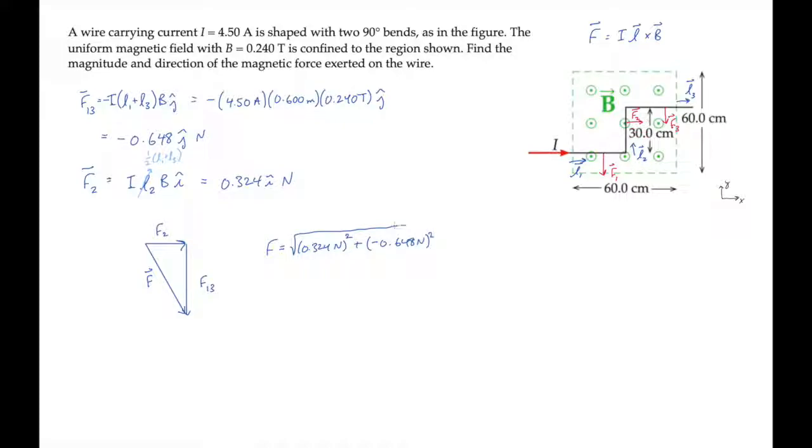It works out to 0.724 newtons. And finally we can find the direction using the inverse tangent of the opposite side length divided by the adjacent side length.